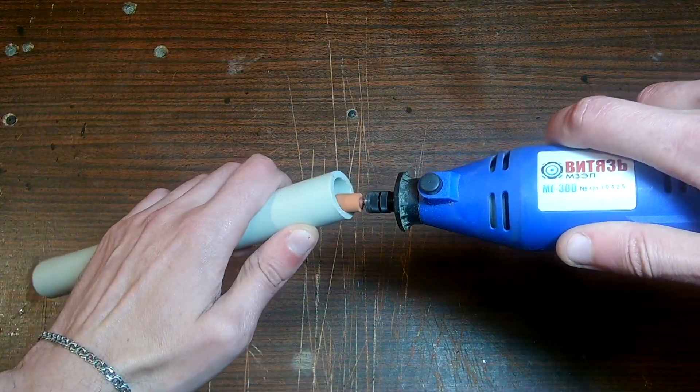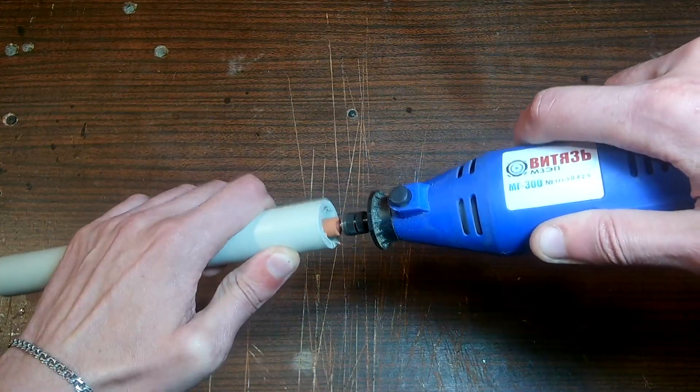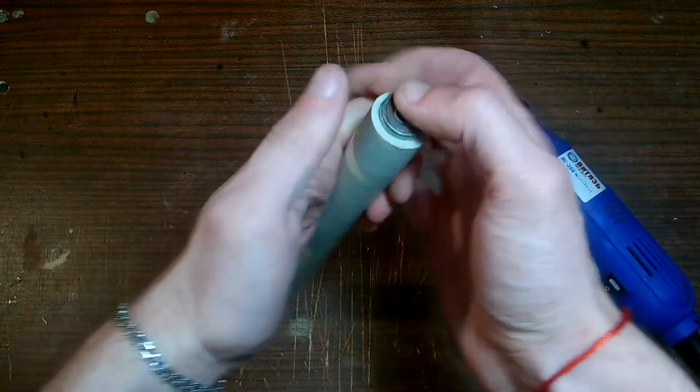We take a small piece of 25mm pipe and expand it a little on both sides. You need to expand it so that a bearing can fit inside.